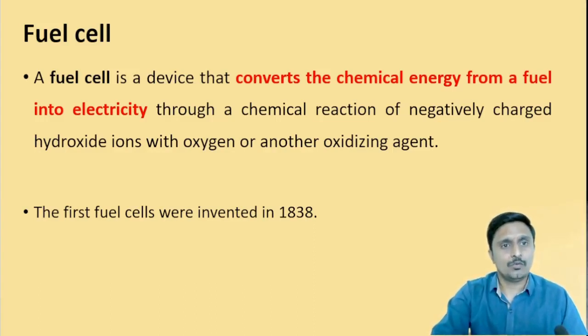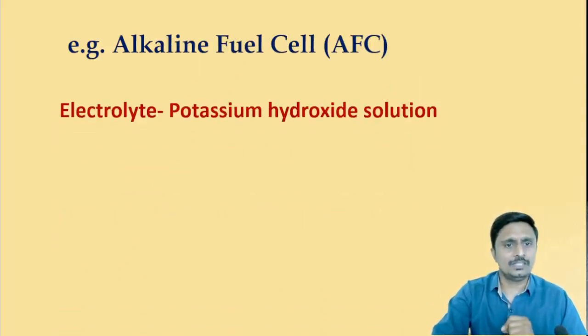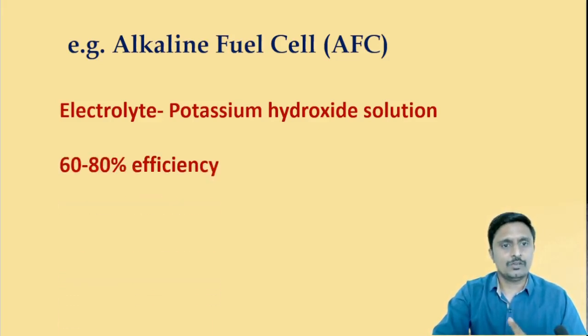What is alkaline fuel cell? We call it AFC. Alkaline fuel cell uses potassium hydroxide solution. Potassium hydroxide solution is a good source of OH- ions that is why we are using this as an electrolyte. This fuel cell is having efficiency about 60 to 80 percent.